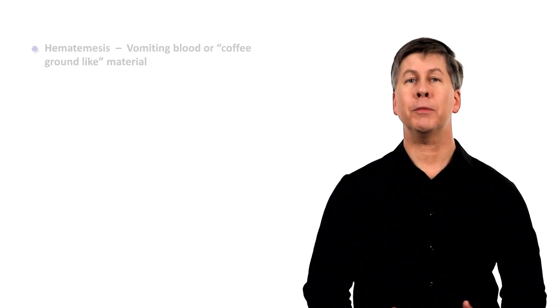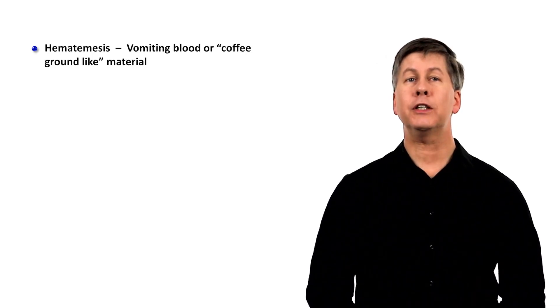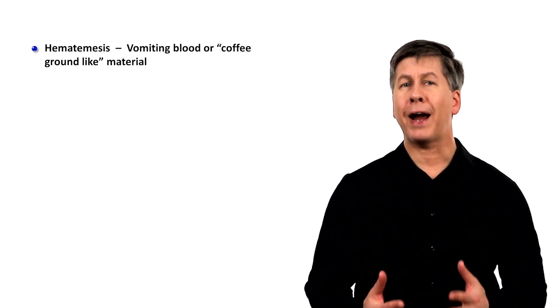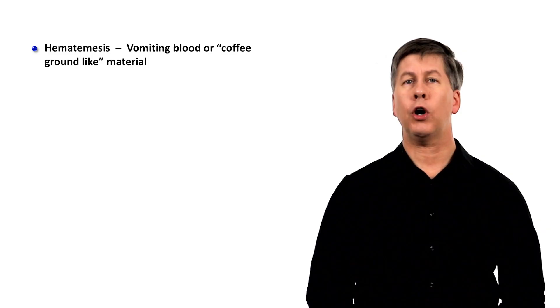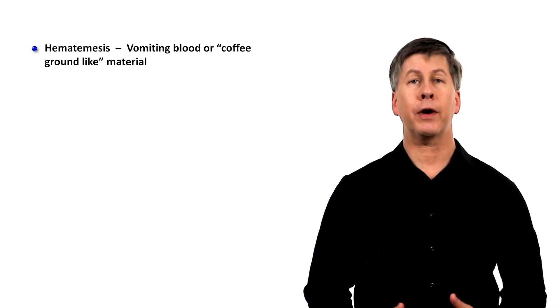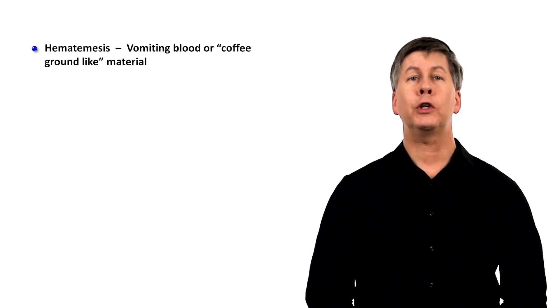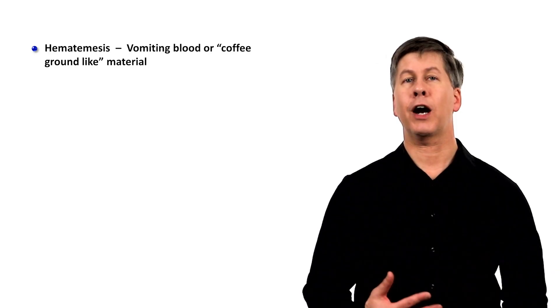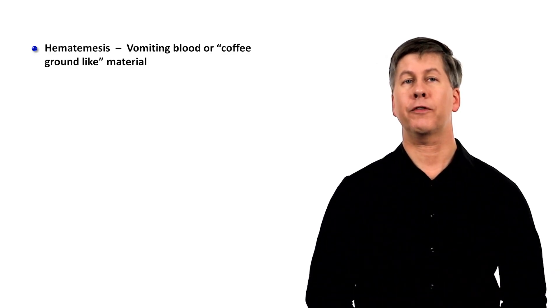First is hematemesis. This is vomiting blood, or a brownish-black, semi-granular substance often described as being like coffee grounds, which is what blood looks like after sitting in the acidic environment of the stomach for a while.